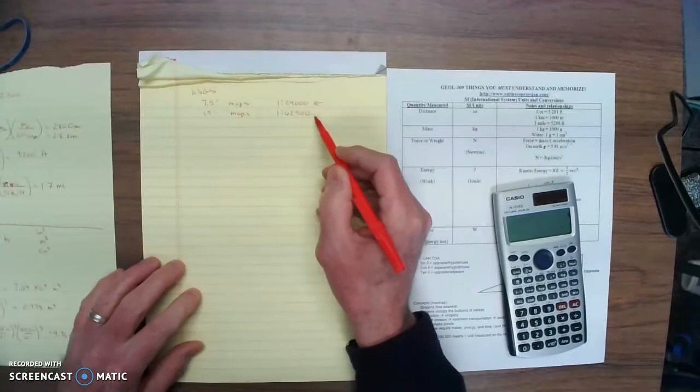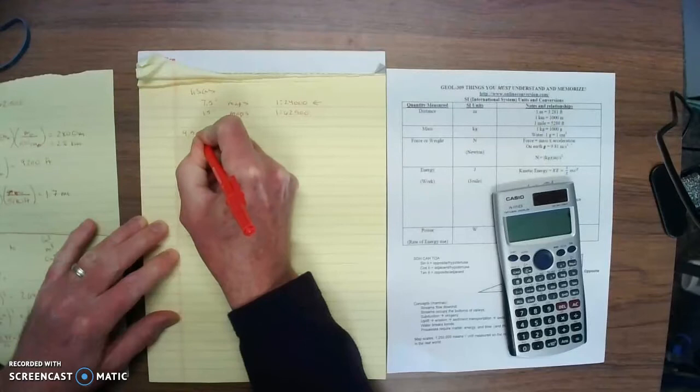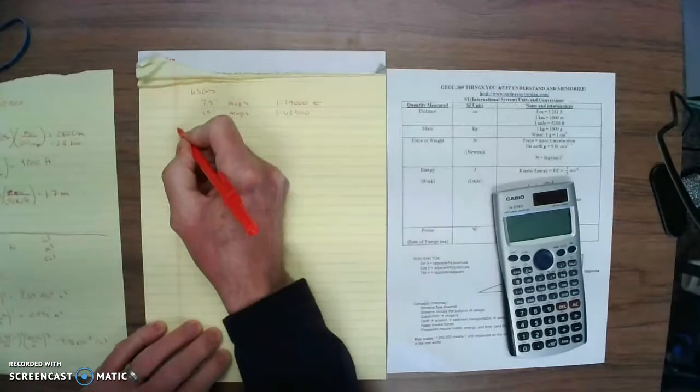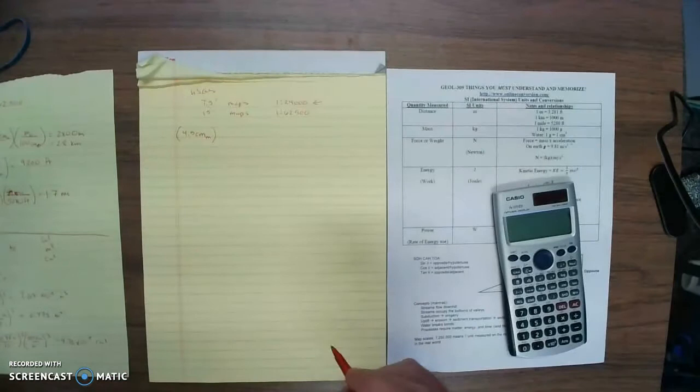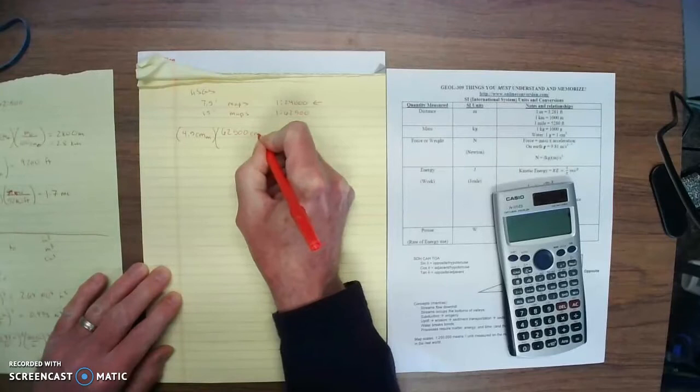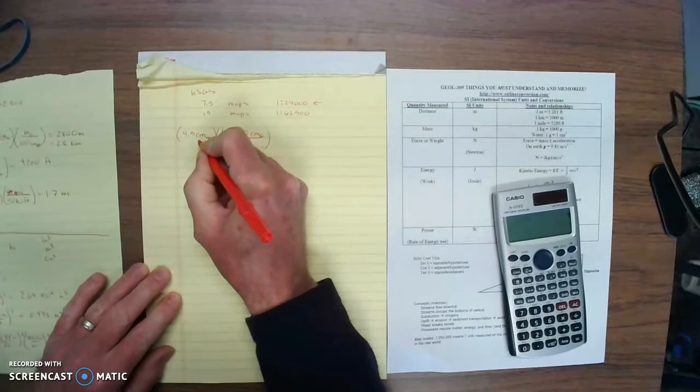So let's do an example. Let's say you measure two points on that map to be 4.5 centimeters distance. So you measure that with a ruler on the map, and you measure that 4.5 centimeters. I'm going to put a subscript M here, indicating that's a distance measured on the map. Now we want to convert that into some meaningful unit for what that distance would be on the ground. So there are 62,500 centimeters subscript G on the ground for every centimeter on the map. There is our conversion, and centimeters on the map are going to cancel out.